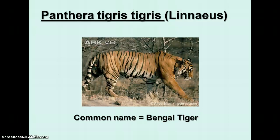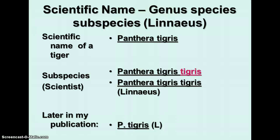Here's the classification of a Bengal tiger. The genus name is Panthera, and the species name is tigris. Then there's a second tigris appended — that is the subspecies. There are several different subspecies of tigers, all belonging to the same genus. In parentheses, we see the name of the scientist who named it, which was Linnaeus in this case.